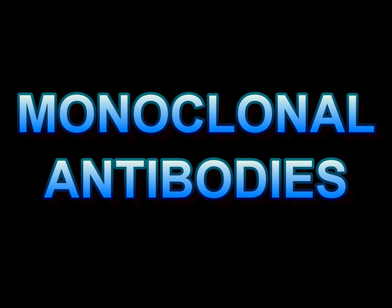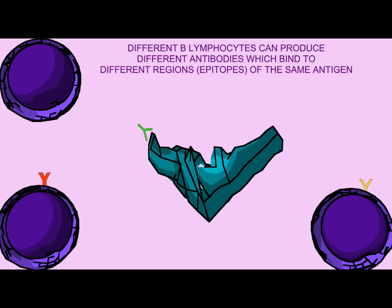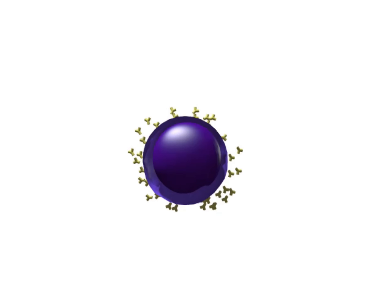In addition to polyclonal antibodies which come from multiple B cell lineages and may bind to different regions of an antigen, it is also possible to produce monoclonal antibodies which are produced by one single B cell line and which will all be identical.